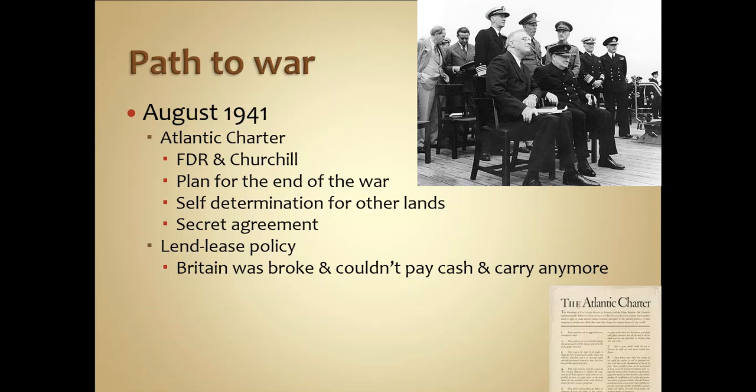The Atlantic Charter replicated aspects of Woodrow Wilson's 14 Points — self-determination, forgiveness, freedom of the seas — as they tried to learn from the mistakes of the Treaty of Versailles and avoid starting World War Three. It was a secret agreement between FDR and Churchill; notably, Joseph Stalin was not present, even though the Soviet Union was now part of the Allied Powers. Churchill did not trust Stalin and didn't want Soviet influence in the post-war peace process — planting the seeds of the Cold War.